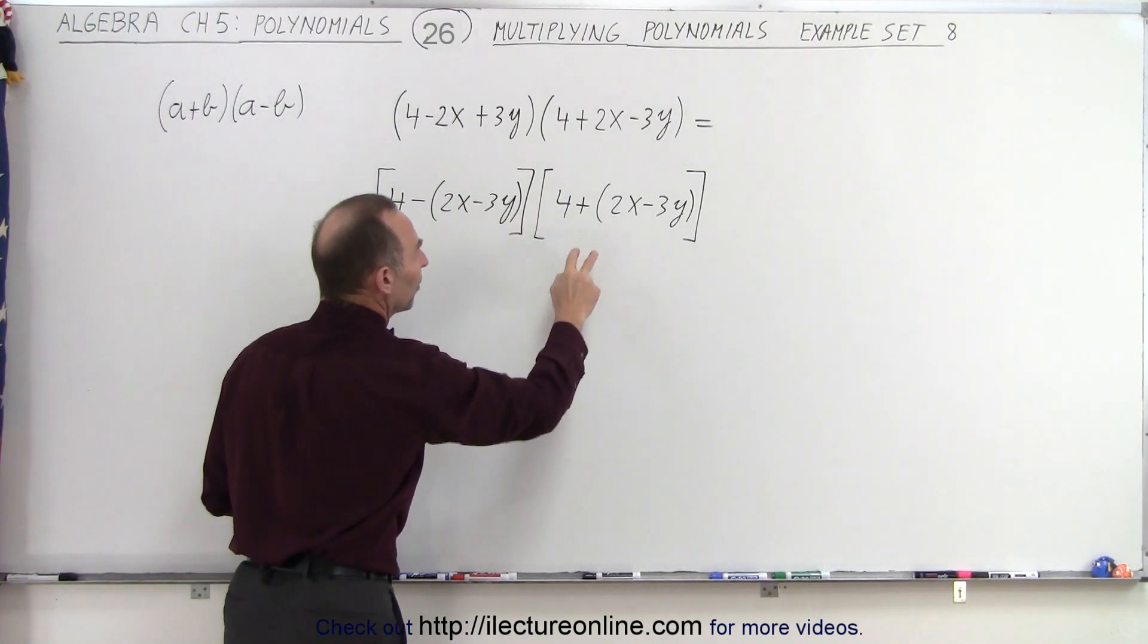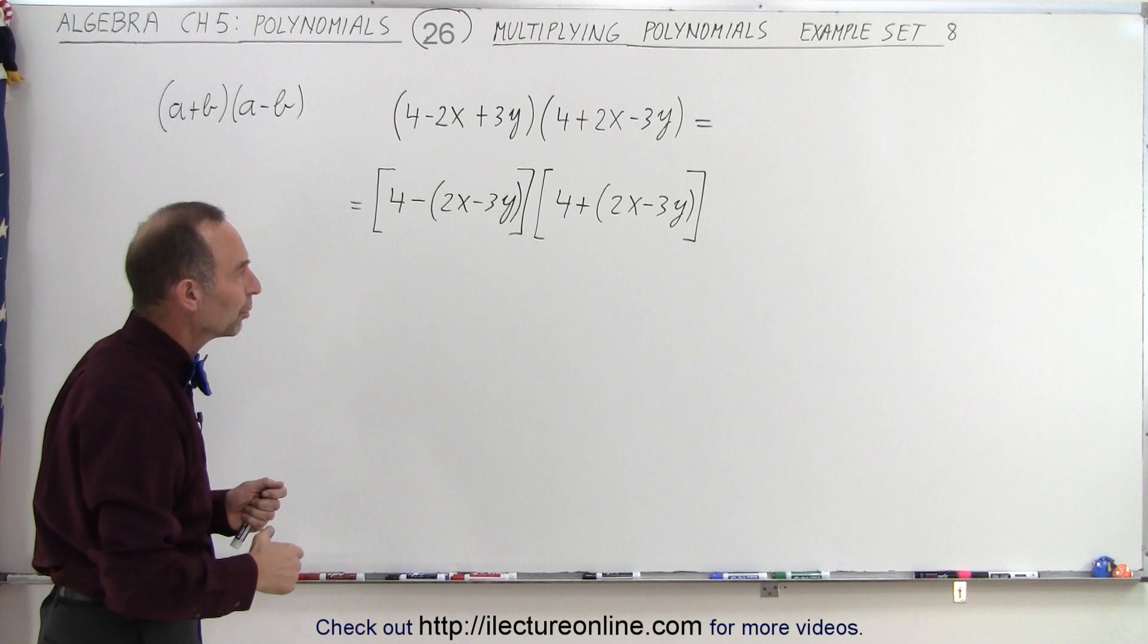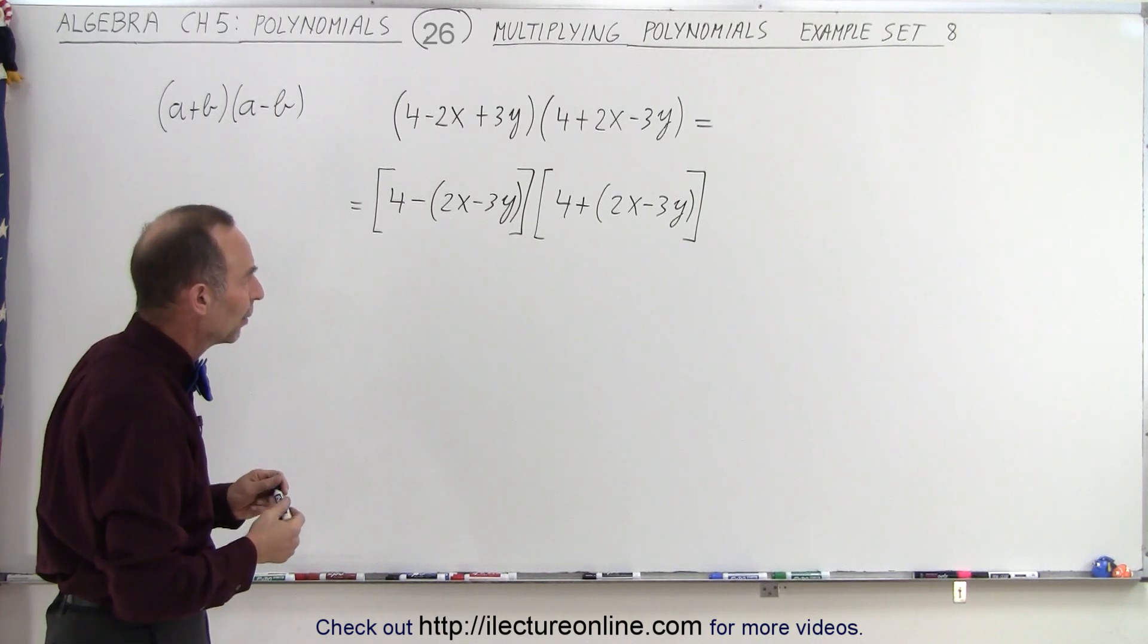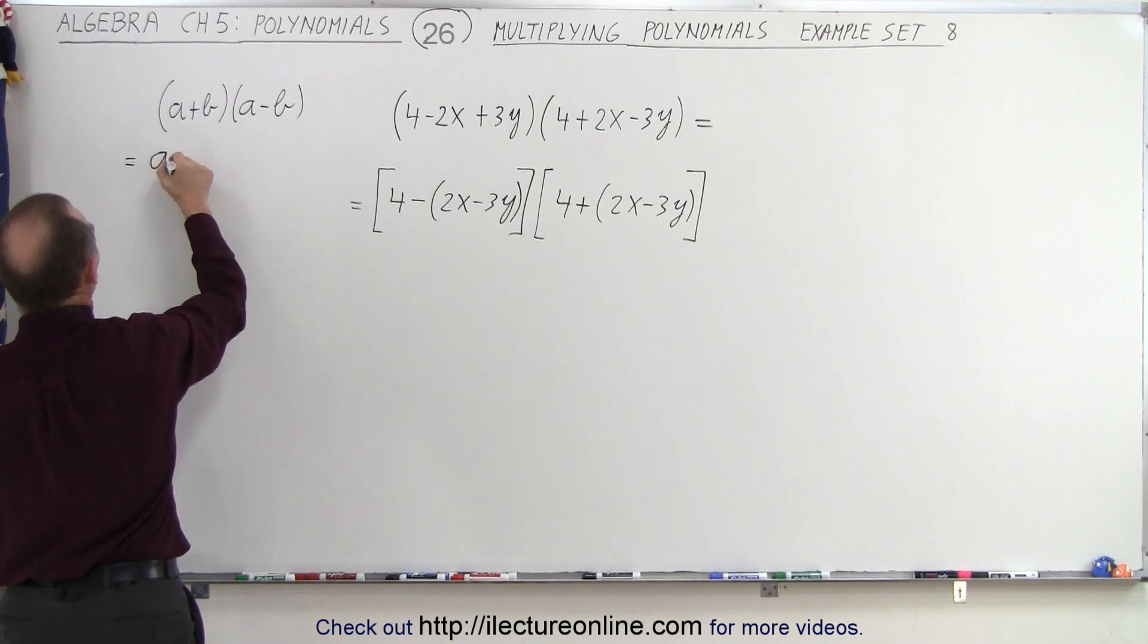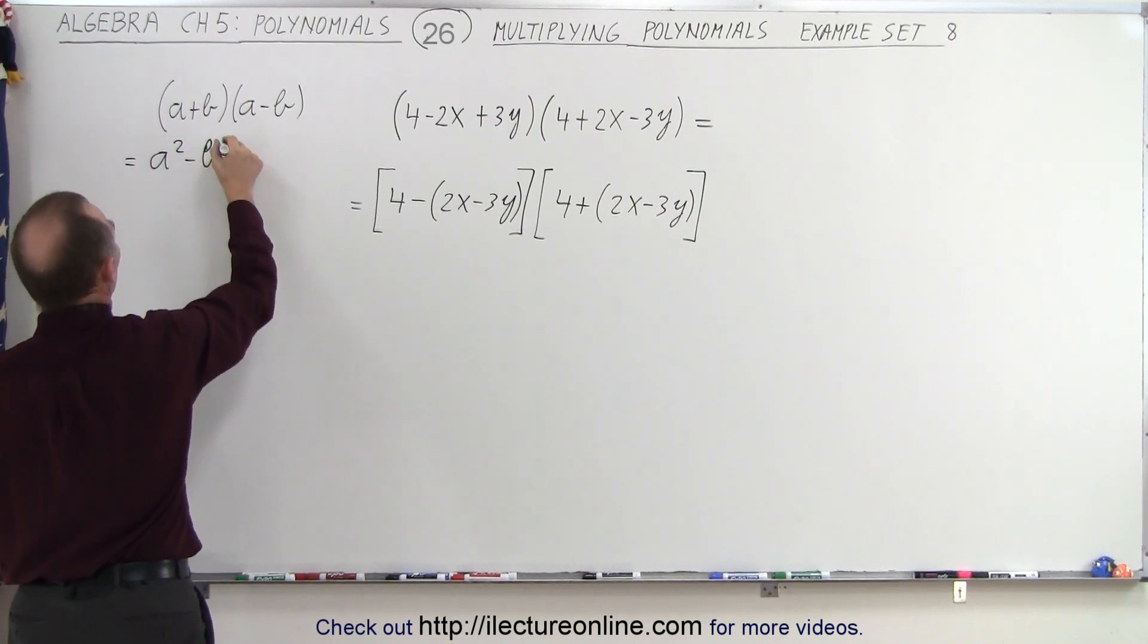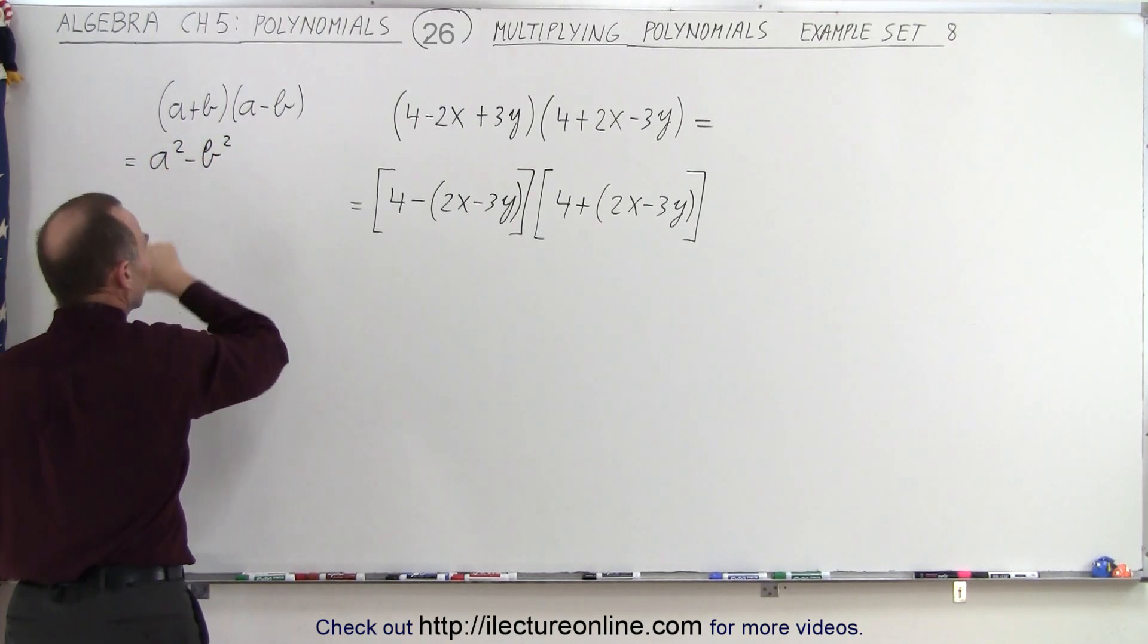It's the difference and the sum of two terms in each of the binomials, and the terms are exactly the same now, which means we can employ this technique, where this equals a² - b², the first term squared minus the second term squared.